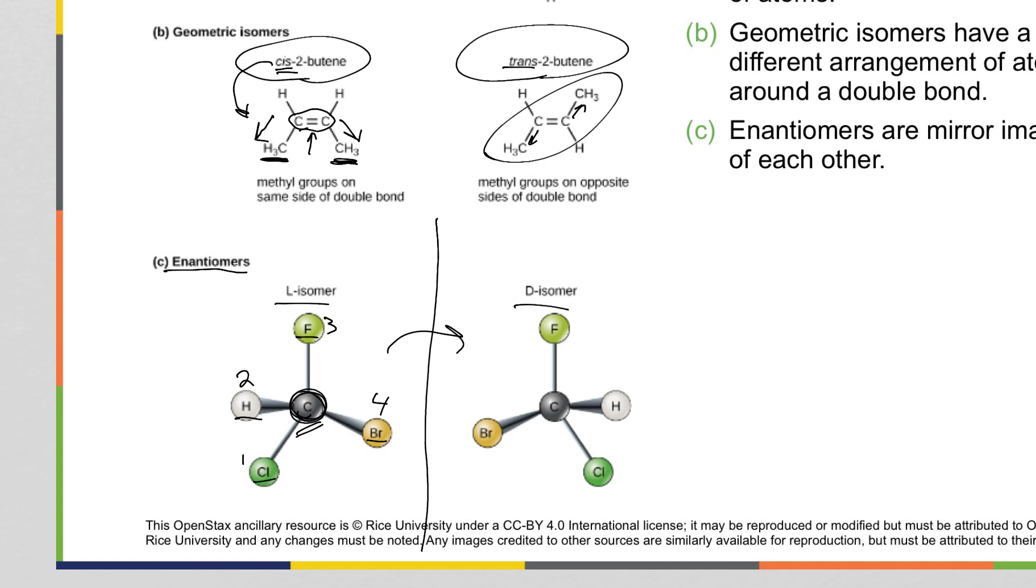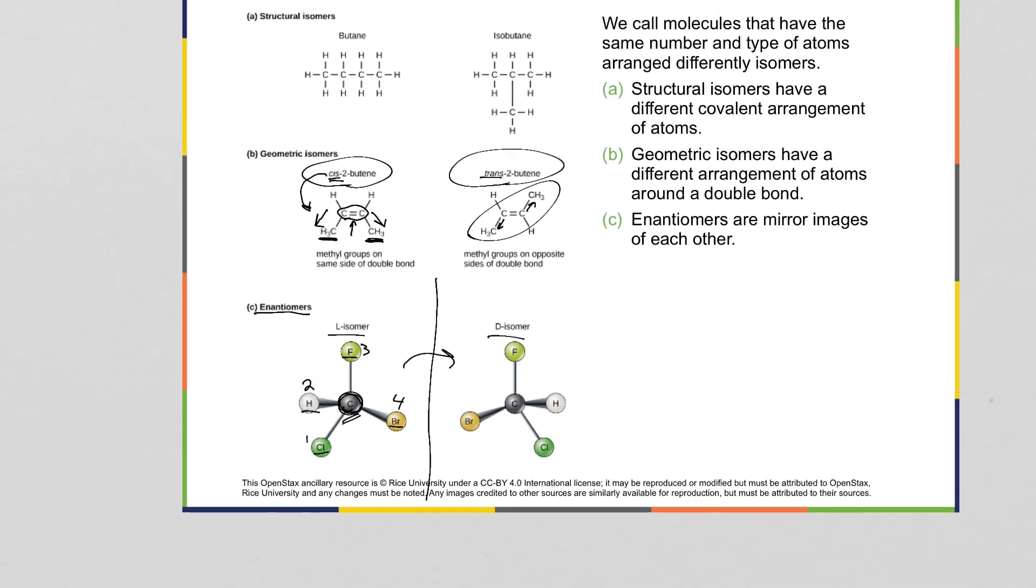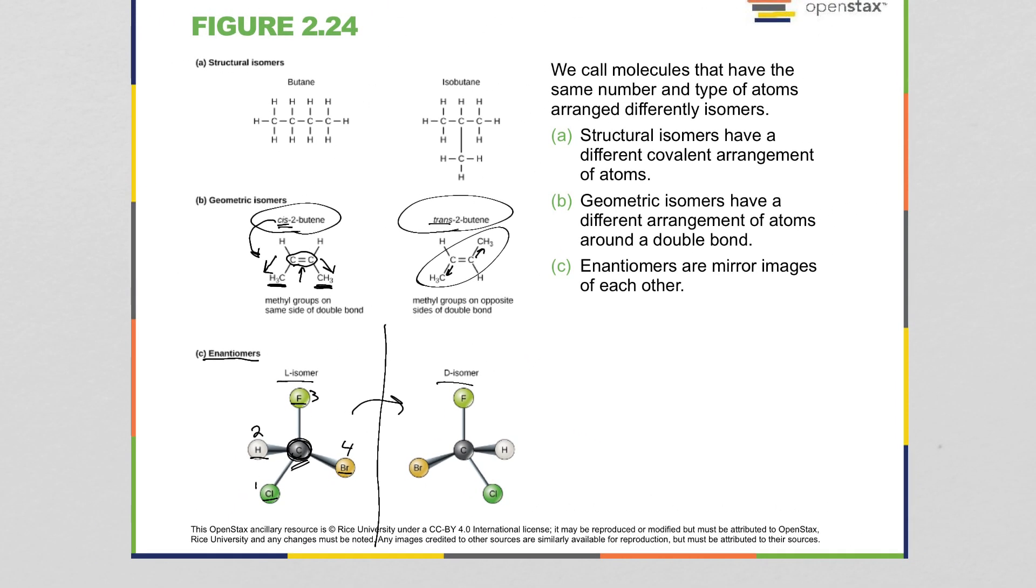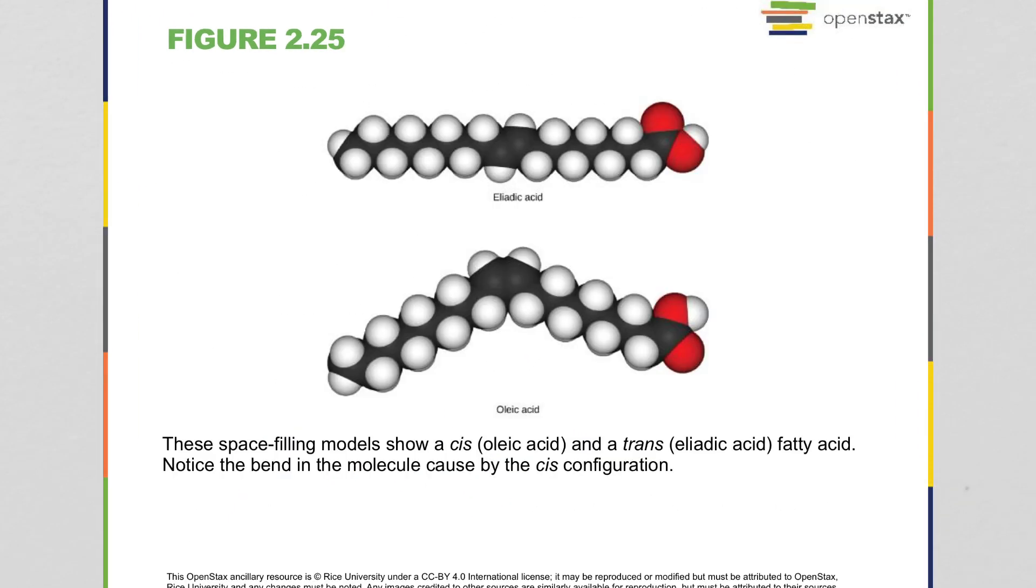If you have four attachments, but two of them are the same, it doesn't work anymore and you won't get the mirror image version of it. When you move on to a chemistry class at some point, the details of that will be a lot more meaningful. For right now, just be ready to recognize that that exists. Okay, so let's do some examples.